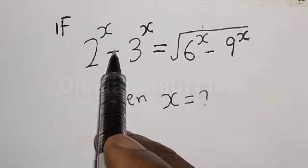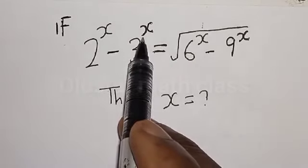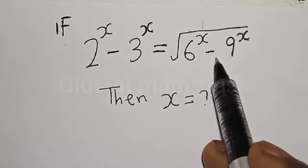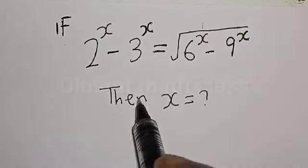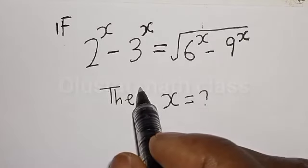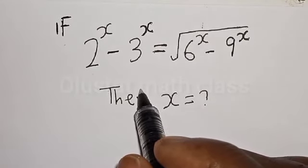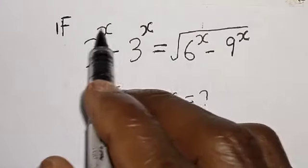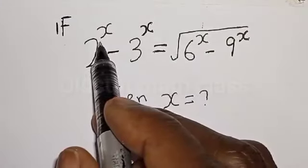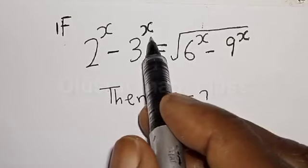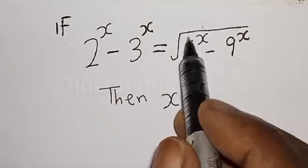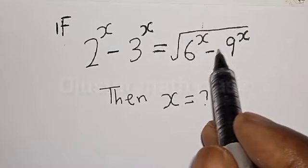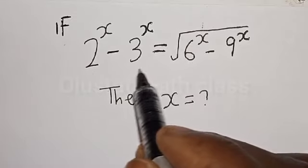If 2 raised to power x minus 3 raised to power x is equal to square root of 6 raised to power x minus 9 raised to power x, then what is the value of x? Hi everyone, welcome to my class. In today's class, we quickly want to find the value of x from this given equation.